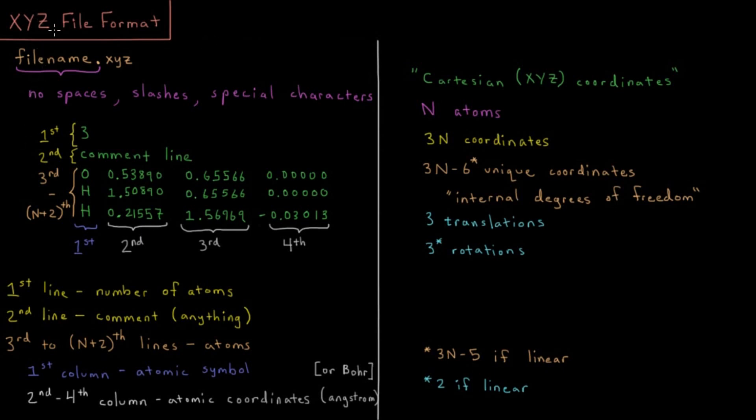So first of all, this XYZ file format. I'm going to have some file name, and in general what I want in my file names are things like no spaces, no slashes, no special characters. Typically, if you have something where you have multiple words in a row, you'll either just put them one right after another or you might separate them by underscores or capitalizing the first letter of each word. So I have some file name and then I have the file extension, which typically for XYZ files, as you might guess, is .xyz.